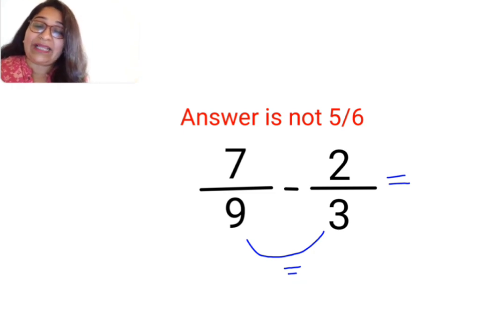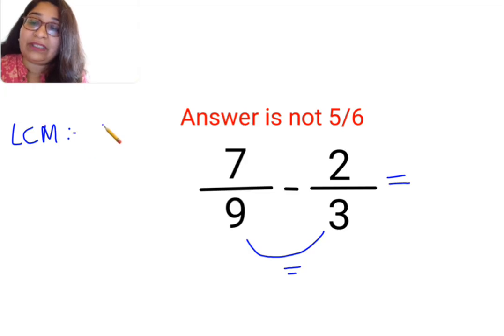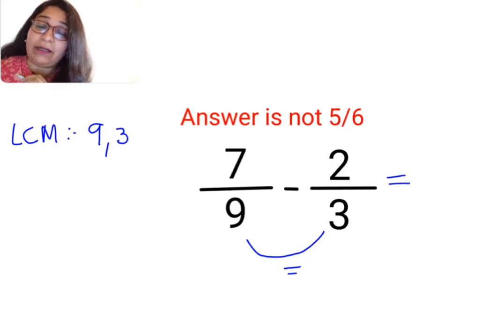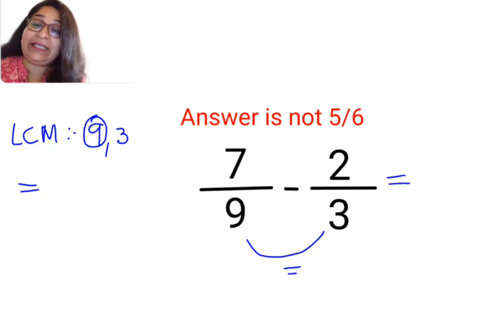So now for that, what we will do is we will try to take LCM of 9 and 3. Now like I have always told you, whenever you want to find LCM of any set of numbers, you will look at the highest number. If 9 comes in the table of 3, then the LCM becomes 9 only.